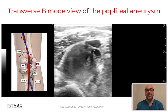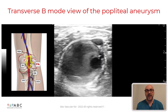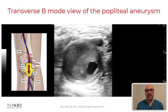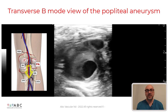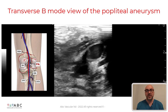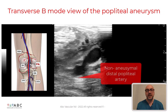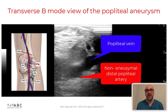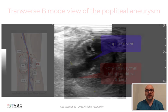By sliding the transducer back down we can identify again the aneurysm, the thrombus, the patent residual lumen, and the distal segment of the non-aneurysmal popliteal artery and vein.